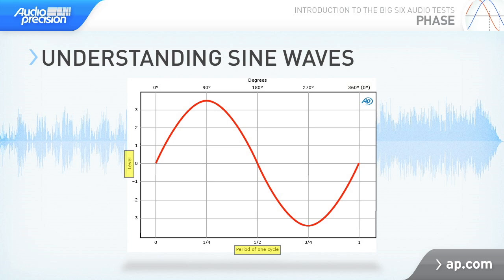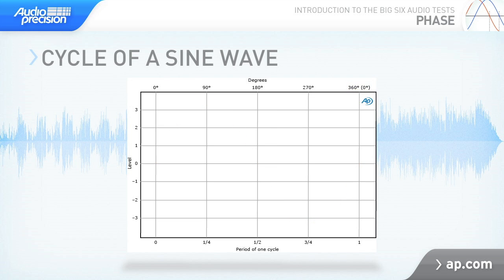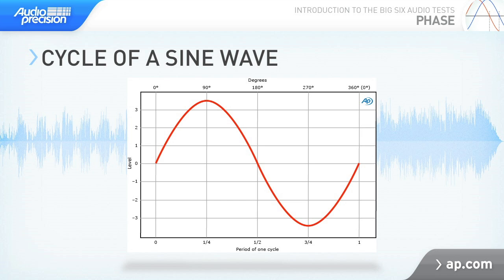The period of a sine wave is the length in time of one cycle. One cycle is 360 degrees. The cycle of a sine wave begins at zero degrees at a level of zero. The wave rises to its positive maximum at 90 degrees, one quarter of its period. At one half period, or 180 degrees, it has fallen back to a level of zero. The wave continues to its negative maximum at 270 degrees, three quarters of its period. Finally, it rises back to zero level. This point can be described as the end of a cycle at 360 degrees, or as the beginning of the next cycle, back to zero.